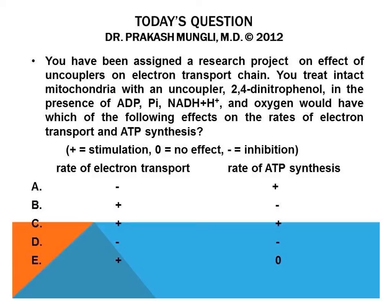Hello everyone, this is Dr. Mungle. Today's question is on the electron transport chain, specifically electron inhibitors and uncouplers. My question concerns a research project on the effect of uncouplers of the electron transport chain. The example of an uncoupler given in the question is 2,4-dinitrophenol.